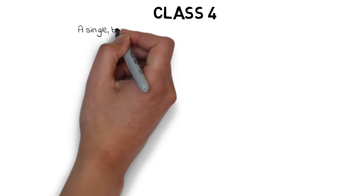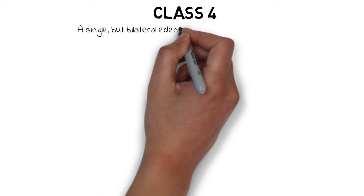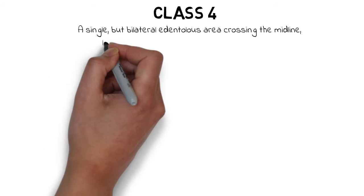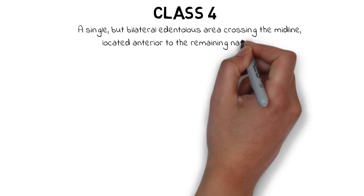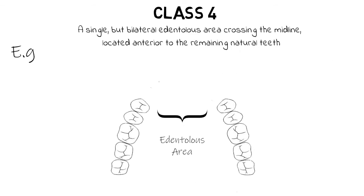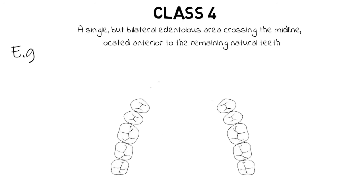Class 4 states that there is a single but bilateral edentulous area located anterior to the remaining natural teeth. It is bilateral because it crosses the midline, but it is still a single area because there are no teeth present in between. So it is a single but bilateral edentulous area crossing the midline, and therefore it is classified as Class 4.